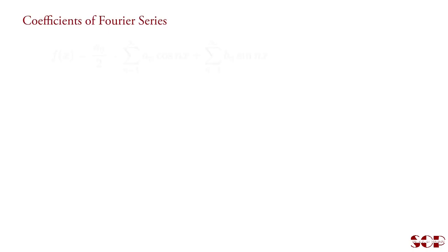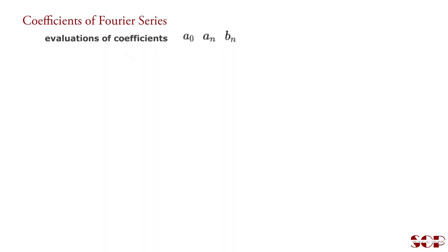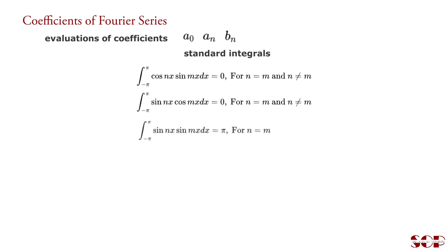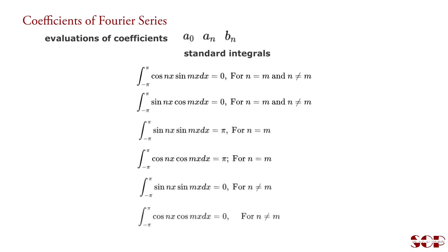The Fourier series of a function f(x) is given as, where a₀, aₙ and bₙ are known as coefficients of Fourier series. For evaluation of these coefficients, we shall need certain standard integrals, which we will consider first. These integrals can be easily proved. We will use some of these standard integrals in evaluation of Fourier coefficients aₙ and bₙ.